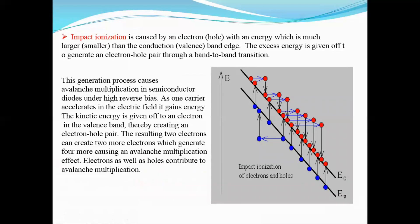The third carrier generation process is impact ionization. An electron with energy much larger than the conduction band energy gives off its energy to generate an electron-hole pair through a band-to-band transition. This generation process causes avalanche multiplication in semiconductor diodes connected under high reverse bias. Under high reverse bias, an electron accelerates in the electric field, gains kinetic energy, and gives off that energy to an electron in the valence band, creating an electron-hole pair. The resulting two electrons create two more electrons, which in turn generate four more, and avalanche multiplication of electrons is created — this is called the avalanche effect.